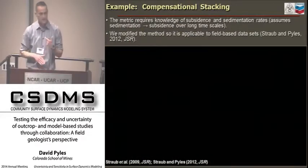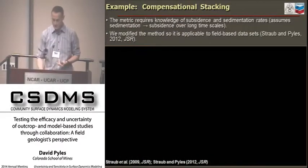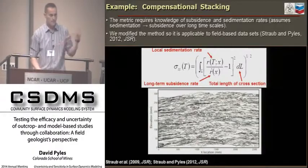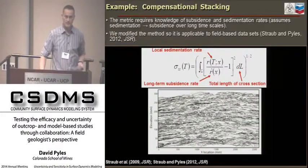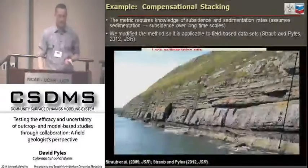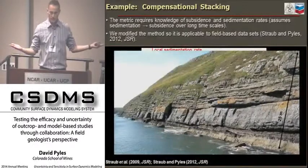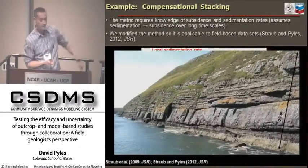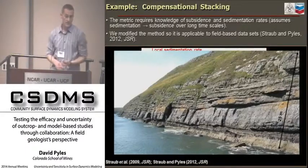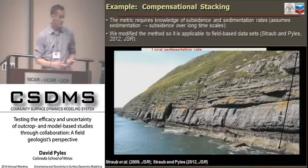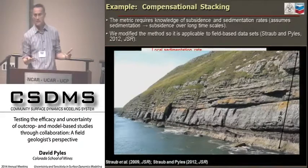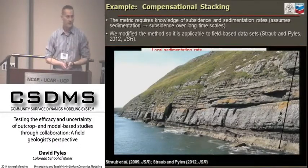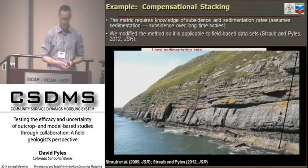I got excited about compensational stacking. The variables are sedimentation rate and subsidence rate. But enter the field geologist's world—this is a sea cliff from Ireland. These rocks are 318 million years old. We can roughly derive the subsidence rate, but it would be averaged over about a 4-million-year duration, which is largely dissatisfying. So when I called Kyle, I said, 'Is there any way we can modify this?' We worked together, spent a weekend on a workshop, and I went back into the field and reevaluated some data.